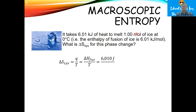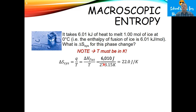Now, what temperature are we going to be at? The question gives the temperature in degrees Celsius, but for this type of calculation the temperature has to be in Kelvin; otherwise you're going to get a really wrong answer. So we'll put the temperature in Kelvin, and we'll find that our delta S for our system is 22 joules per Kelvin — meaning this is the amount that we increase the disorder in that system.